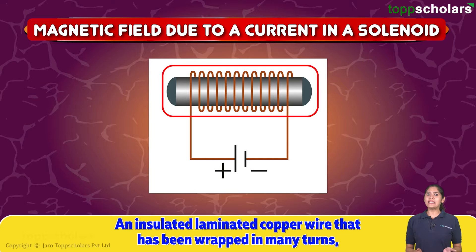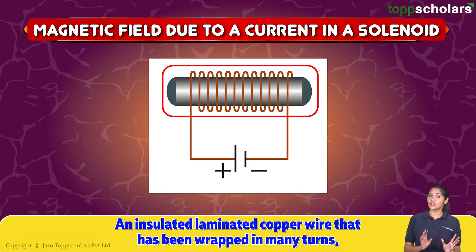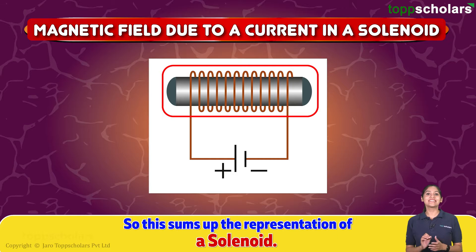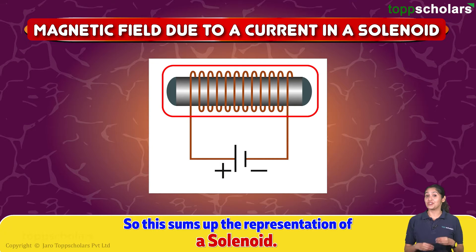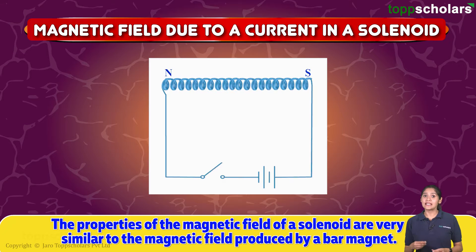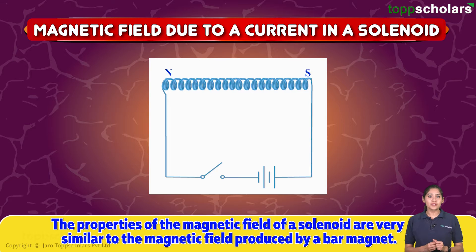Here, you are seeing an insulated laminated copper wire that has been wrapped in many turns. So, this sums up the representation of a solenoid. As you can see, when a battery is applied and current is passed through the solenoid, a magnetic field is produced.